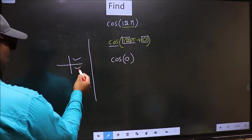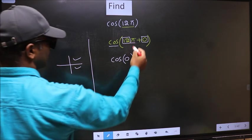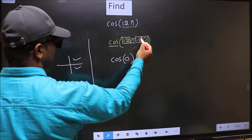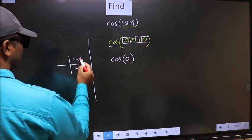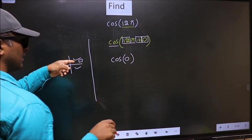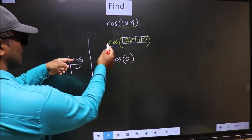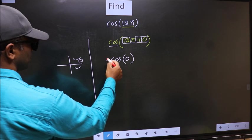So now to select the quadrant, we should look at this symbol. Here we have plus, so the angle lies in first quadrant, and in the first quadrant cos is positive. So we should put plus.